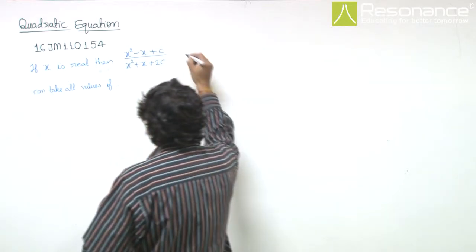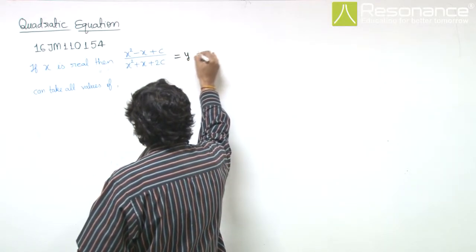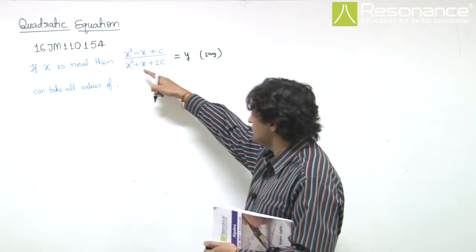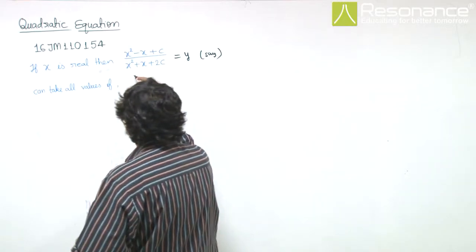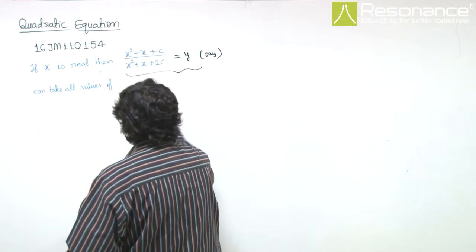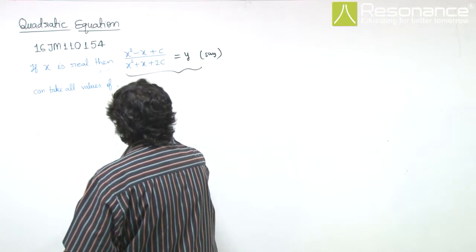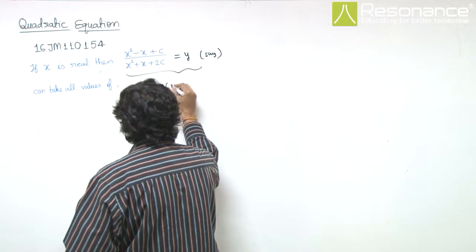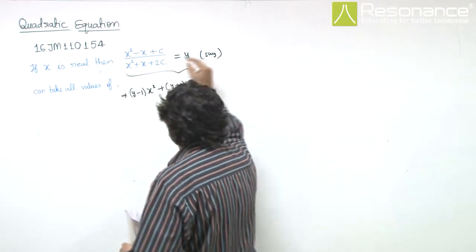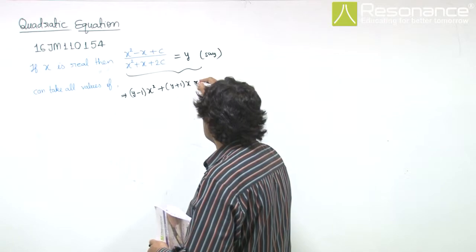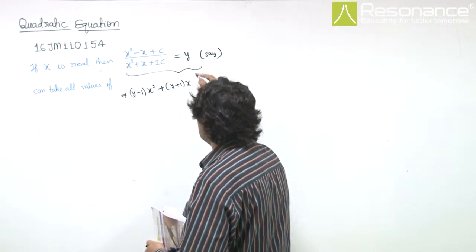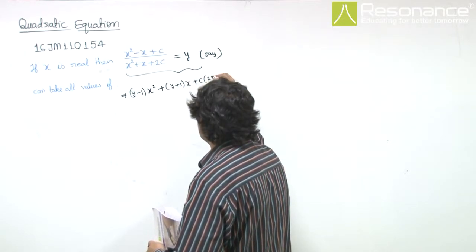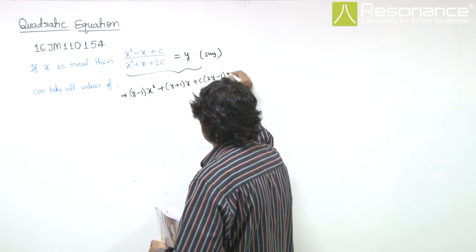So, let's assume this equals y. Now cross multiply and bring everything to one side. This is yx square minus x square, so we can write it as (y minus 1)x square, (y plus 1)x, plus 2cy minus c. I can take c common and write this as c(2y minus 1) equal to 0.